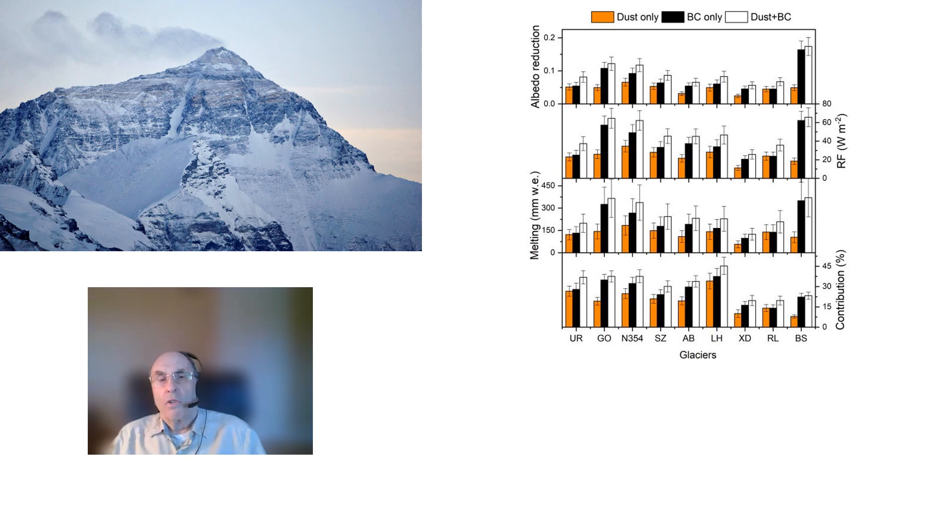The bottom row shows the most important results. Namely, what percentage of the glacier melt results from dust and black carbon deposits. And, as you can see, the contributions are significant for all 10 glaciers studied, averaging about 20%.